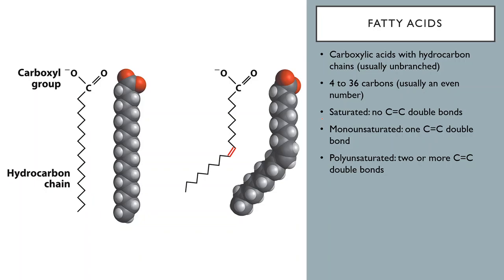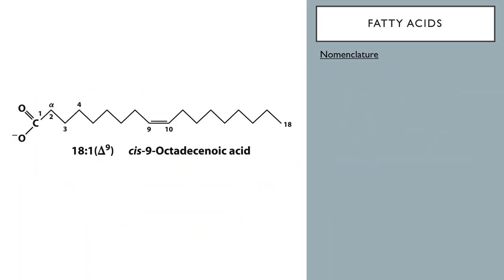You can have diunsaturated, triunsaturated, and so on. There's a pretty simple nomenclature for fatty acids. They have a systematic name which is the standard organic chemistry name. For example, a molecule with 18 carbons and one double bond is called octadecanoic acid: 'octa' means eight, 'deca' means ten, so 'octadeca' means 18. Because it has one double bond, it's 'octadecenoic' rather than 'octadecanoic,' and we say 'octadecenoic acid' because it has a carboxylic acid group at the end.